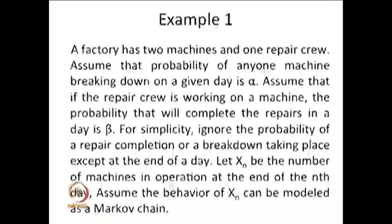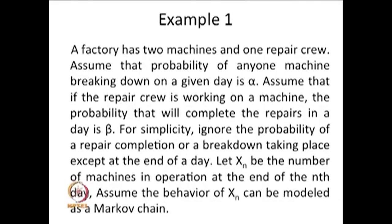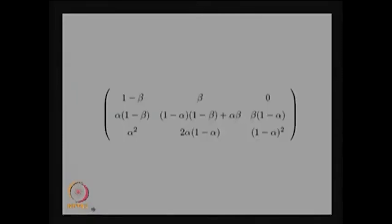Our interest is to find the one-step transition probability matrix, with the assumption that Xn is also time homogeneous. Since it is a time homogeneous DTMC, we are trying to find the one-step transition probability matrix P. The possible states are 0, 1, and 2.